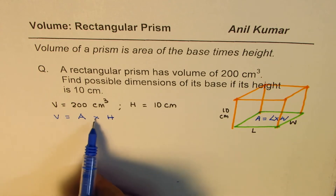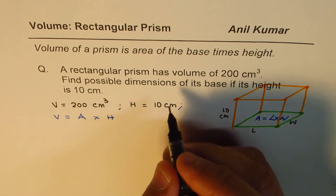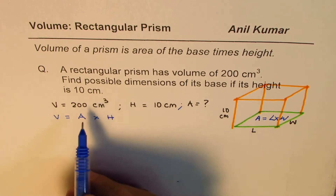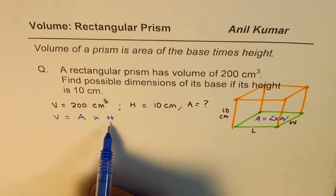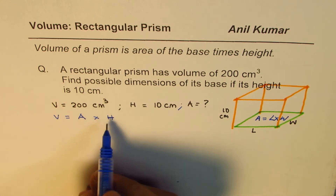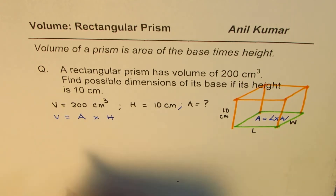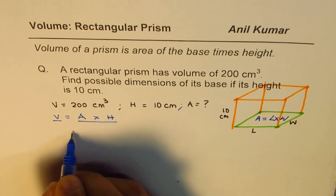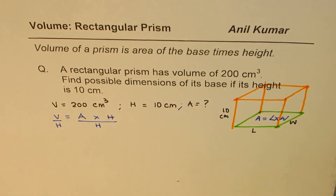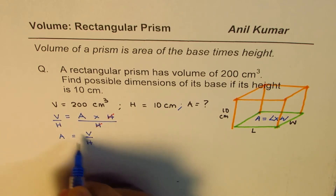Volume is area of base times height. We know what volume is and we know what height is. What we need to find is area first. We can substitute these values and find what area is, or we could also rearrange: area will be equals to volume divided by height. We get that by rearranging the formula — dividing both sides by height. So the formula for area will be: area is volume divided by height.